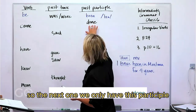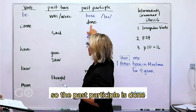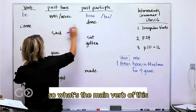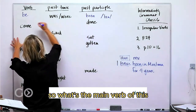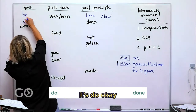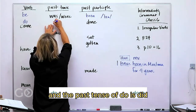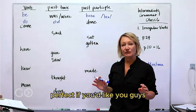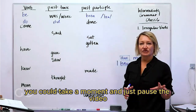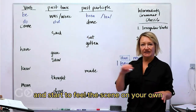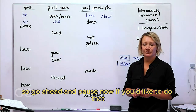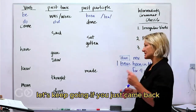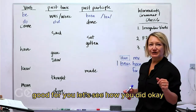The next one — we only have the past participle, which is 'done.' Going back to the main verb, it's 'do.' And the past tense of 'do' is 'did.' If you'd like, you could pause the video and start to fill this in on your own. Go ahead and pause now if you'd like. If you're sticking with me, let's keep going.